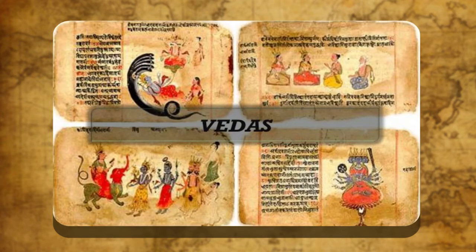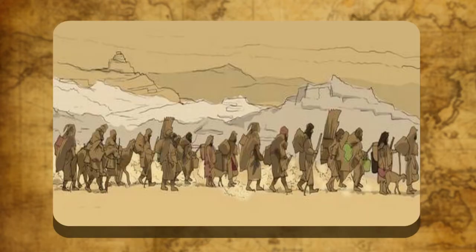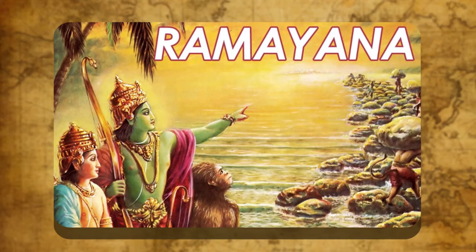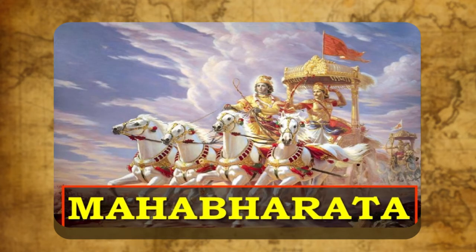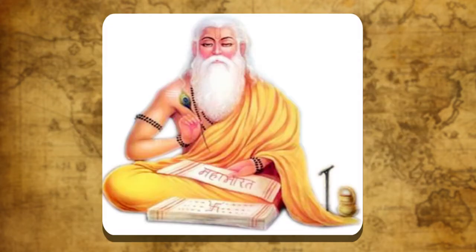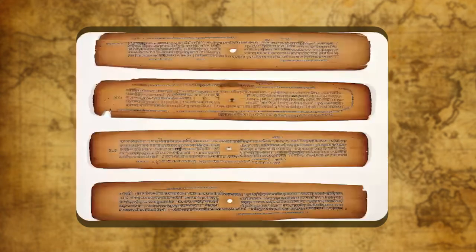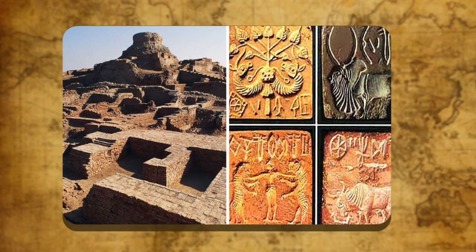The four Vedas are the Rig Veda, the Sam Veda, the Yajur Veda and the Atharva Veda. Out of the four Vedas, the Rig Veda is the most ancient and gives a lot of information regarding the history and the political system of the Aryans. Next to the Vedas, the two great epics, the Ramayana and the Mahabharata, are the most famous books in Sanskrit literature. The Ramayana was written by Maharshi Valmiki and the Mahabharata by Maharshi Vedavyasa. The Tripitakas, the Jataka Kathas, and the Gita and Puranas are rich sources of ancient historical information.